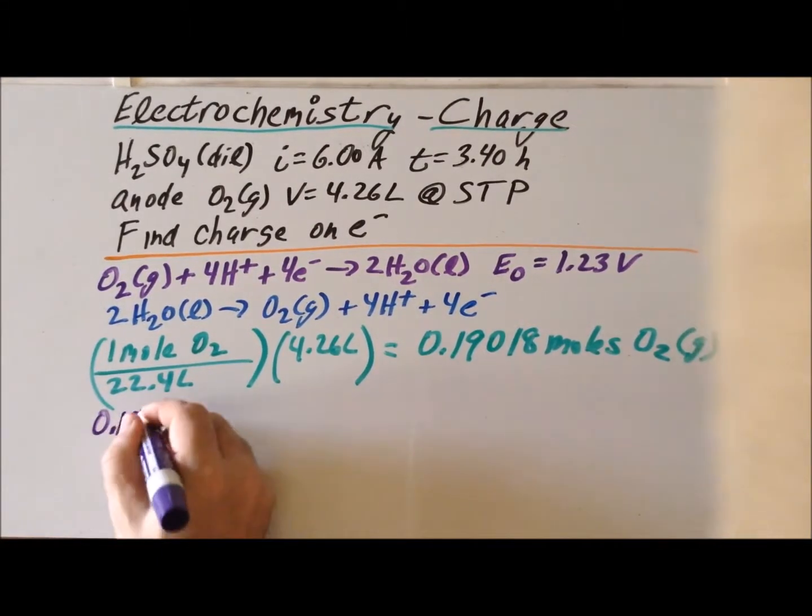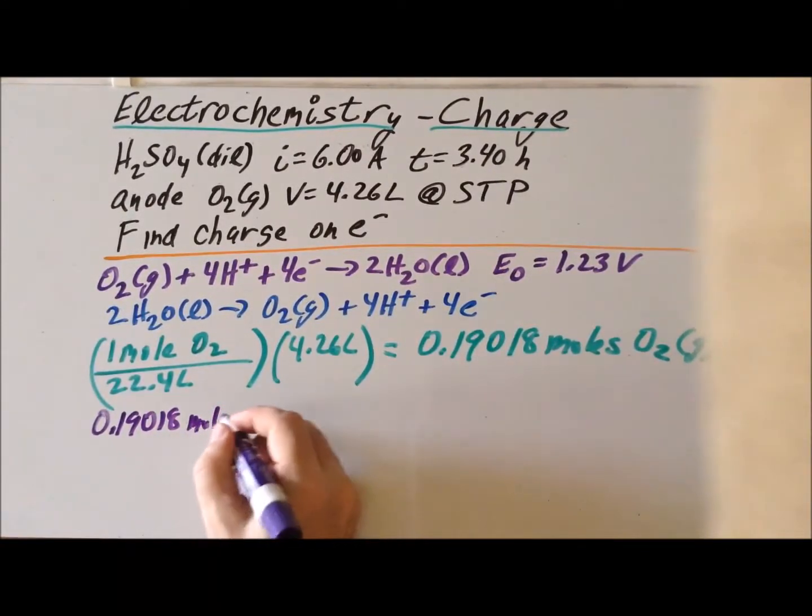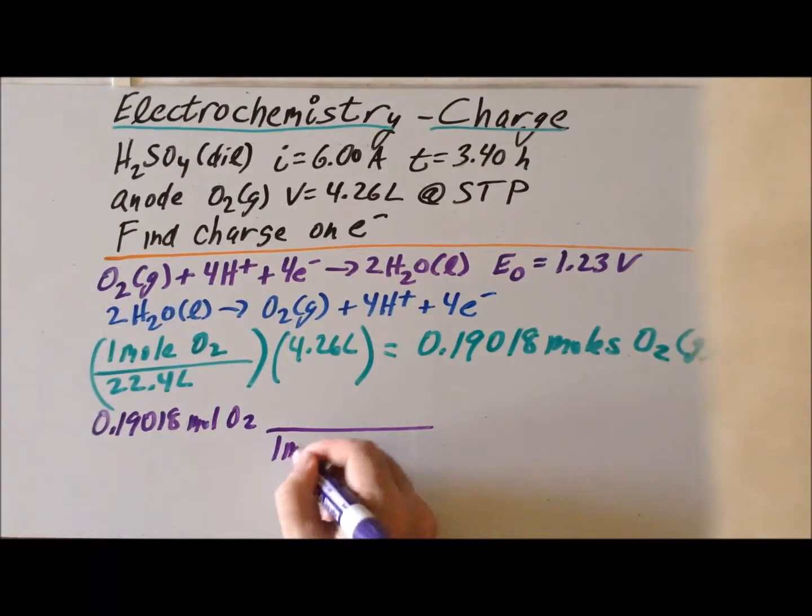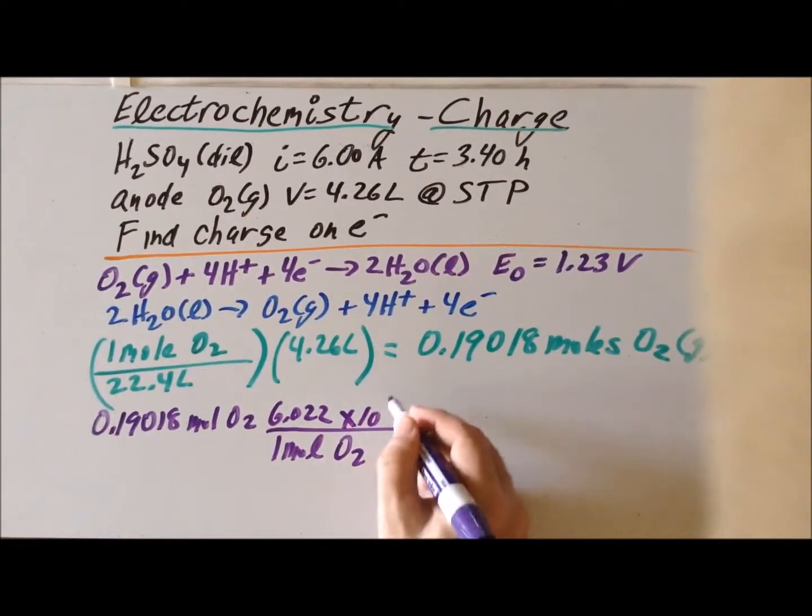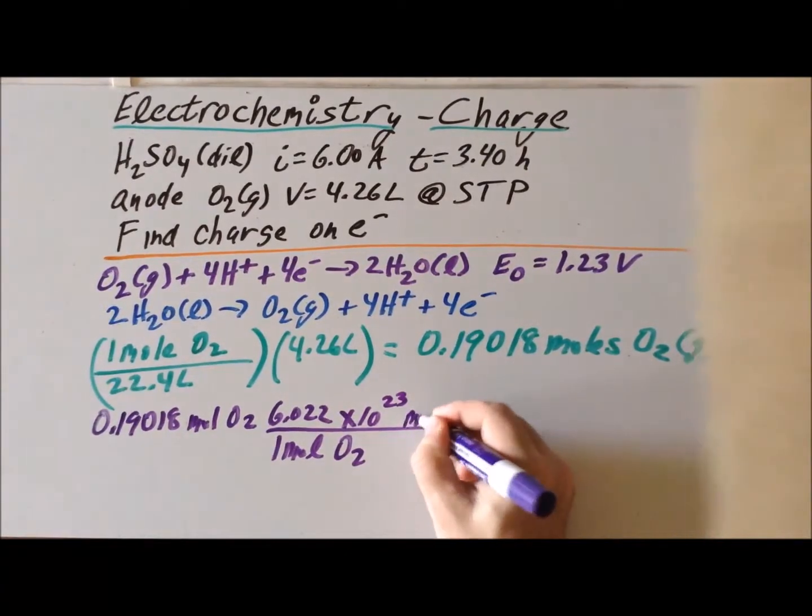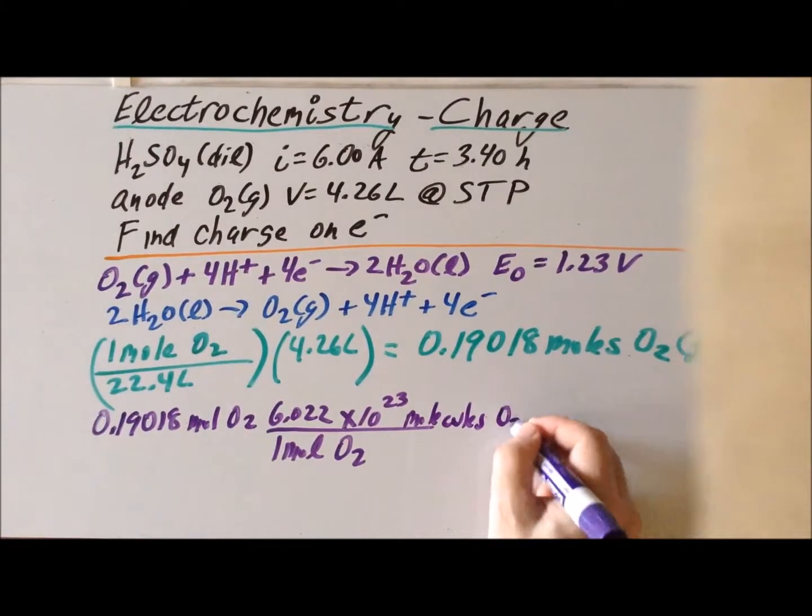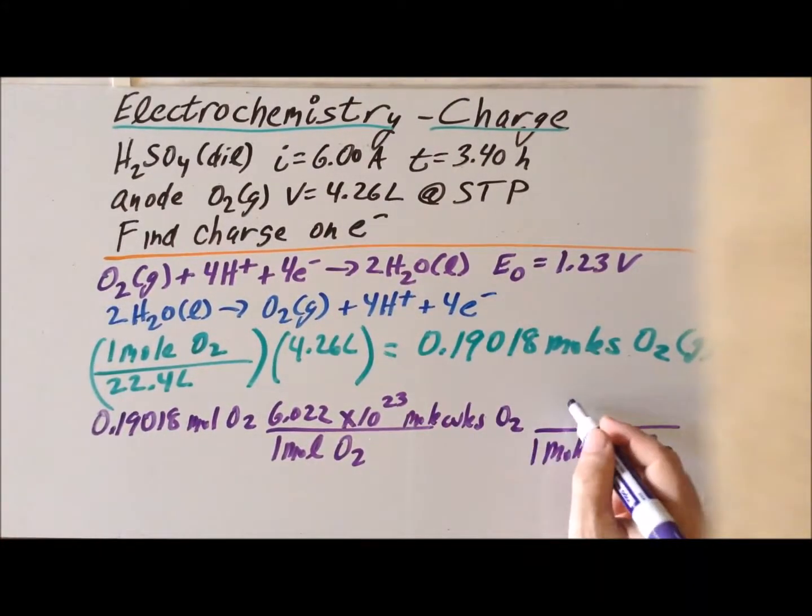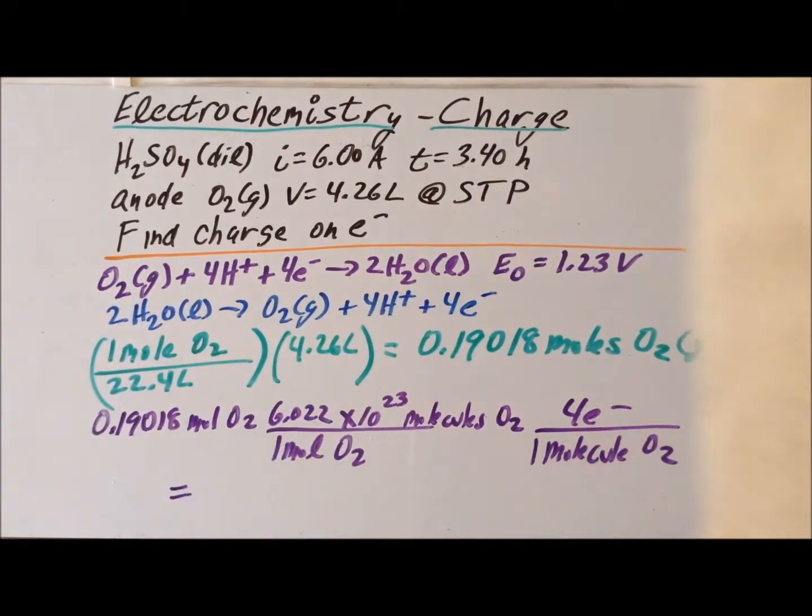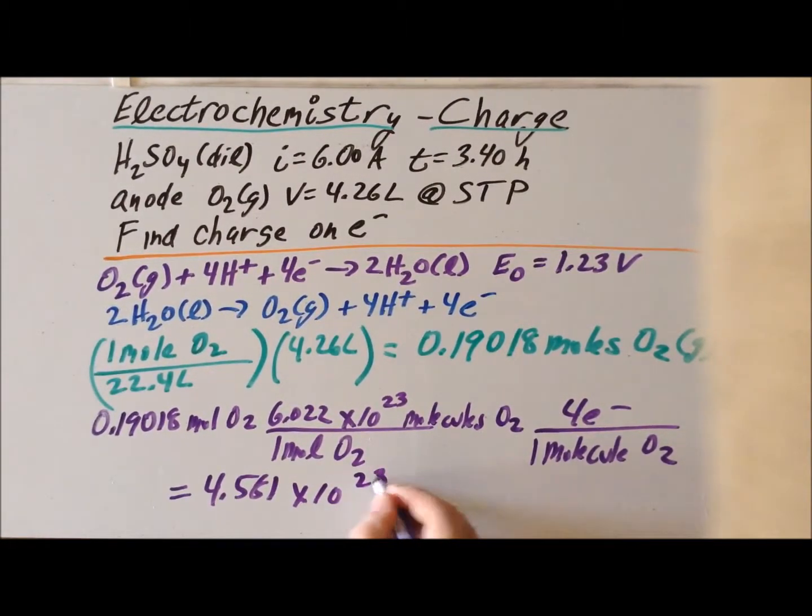So we have moles of O2. And we know that in one mole of O2 gas, we have 6.022 times 10 to the 23rd molecules of O2. And we also know that for one molecule of O2, we had to transfer four electrons. So involved in the entire electrolysis, generating that volume of O2 gas involved a total of 4.581 times 10 to the 23rd electrons. So we've determined the relationship between the volume of O2 gas and the number of electrons that were transferred.